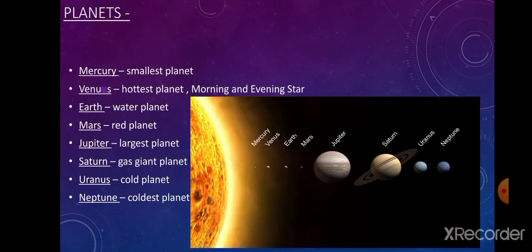Each planet moves around the sun in a fixed orbit, and the movement of planets around the sun is known as revolution. There are eight planets in total: Mercury, Venus, Earth, Mars, Jupiter, Saturn, Uranus, and Neptune.